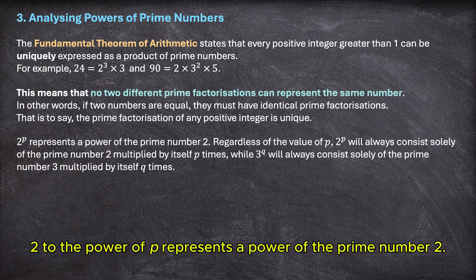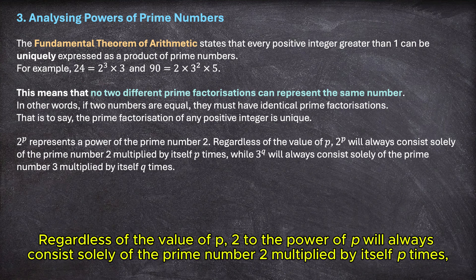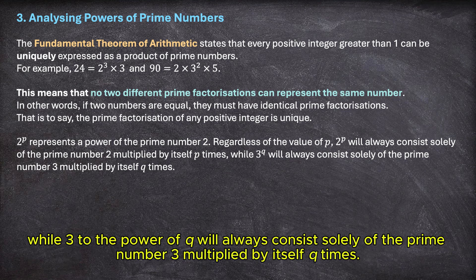2 to the power of p represents a power of the prime number 2. Regardless of the value of p, 2 to the power of p will always consist solely of the prime number 2, multiplied by itself p times, while 3 to the power of q will always consist solely of the prime number 3 multiplied by itself q times.